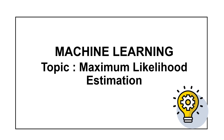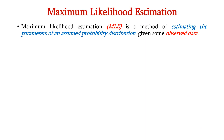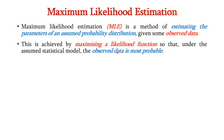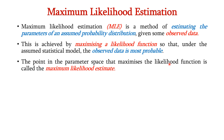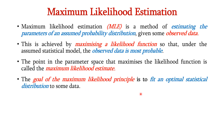Hello everyone. In this lecture we are going to discuss maximum likelihood estimation in machine learning. Assume that we are given some observed data. Maximum likelihood estimation, or MLE, is a method of estimating the parameters of an assumed probability distribution for the given observed data. This is achieved by maximizing the likelihood function so that under the assumed probability distribution or statistical model, the observed data is most probable. The point in the parameter space that maximizes the likelihood function is called the maximum likelihood estimate. The goal of the maximum likelihood principle is to fit an optimal statistical distribution to some data.